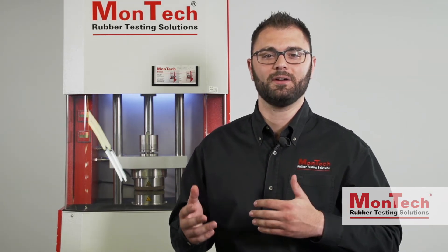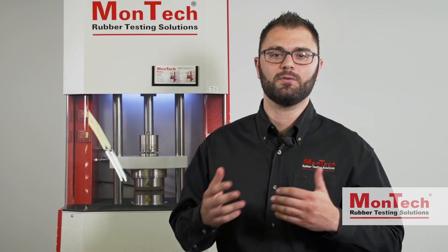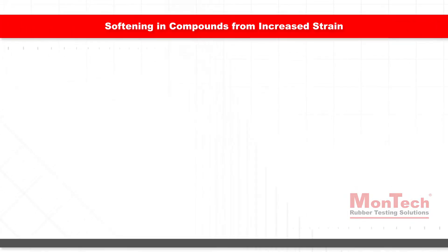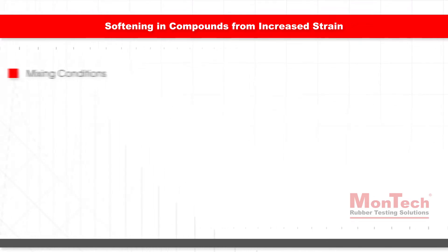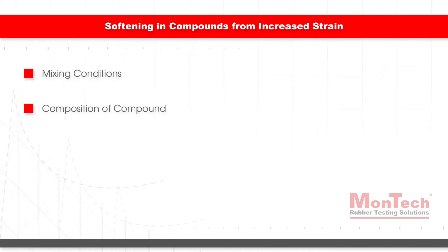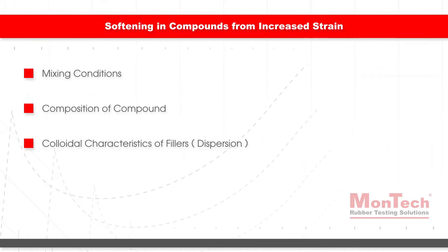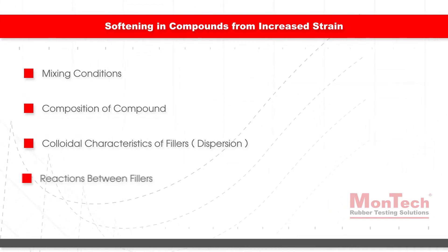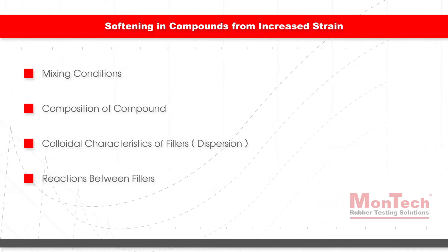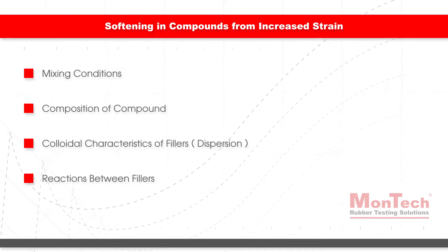Filler networks are held together by either or both, depending on the compound. The amount of softening that occurs in a compound from increased strain can be attributed to mixing conditions, the composition of a compound, the colloidal particle characteristics of the fillers in the compound, or in some cases, reactions that occur between fillers during mixing.